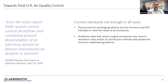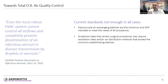Current standards are not enough in all cases. We're all familiar with the current pressure and air exchange guidelines — positive pressure and 20 air exchanges per hour — but these are minimums and are not intended to meet the needs of all procedures. The ASHRAE position document on infectious aerosols specifically states that even the most robust ventilation system cannot completely prevent dissemination of an infectious aerosol. ASHRAE 170 guidelines state that surgical procedures may require ventilation rates and air distribution methods that exceed the minimum established guidelines.